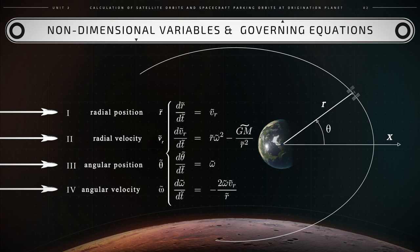This is the first system. The expressions in this system are then complemented by the so-called initial conditions. These are the magnitudes of these four non-dimensional variables at the beginning of the space flight.